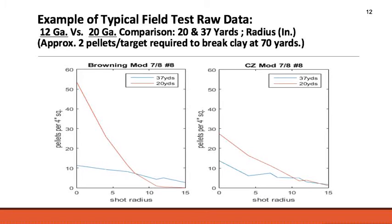When comparing a 20-gauge versus a 12-gauge with all other components the same, you can see there are more total pellets in the 12-gauge. We predict this is because there are more inter-barrel interactions with the smaller 20-gauge barrel, where pellets become flattened and misshapen by hitting each other in the barrel, causing them to fly off target and be useless for breaking clay.